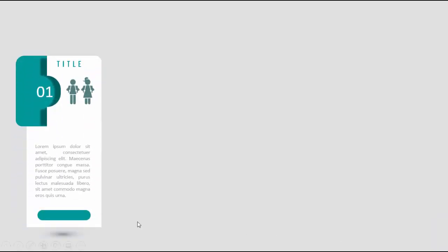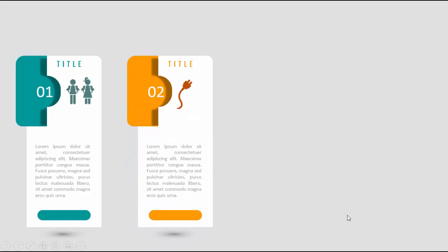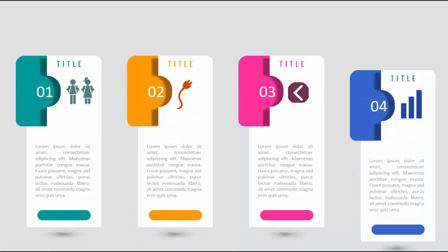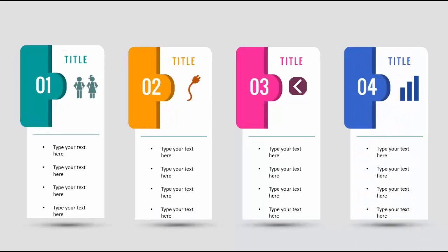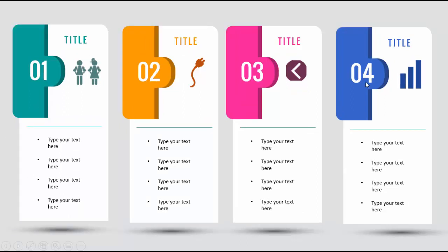Hello and welcome to my YouTube channel PowerPoint University. In this tutorial I'm going to show you how to create four animated options in PowerPoint. When I click it will show you option one, where you can have your title, icons, detailed text, and a button. Then option two, option three, and option four. You can add bullet points also, and this is a bigger size. So let's see how to create this infographic slide in PowerPoint.